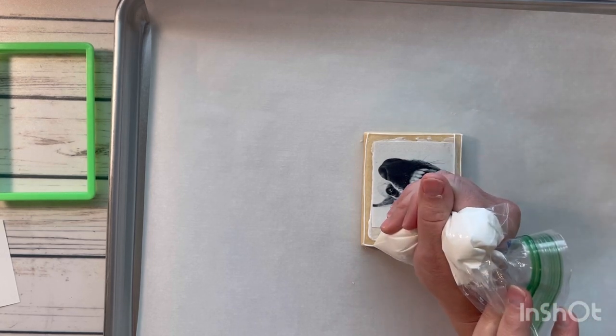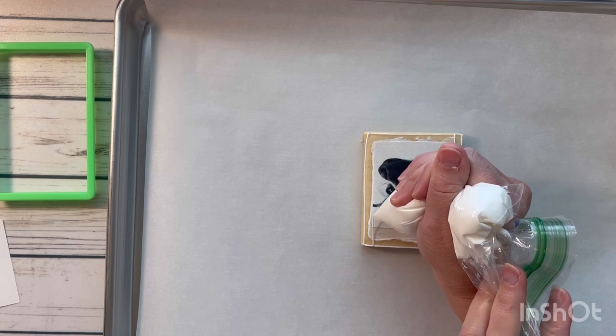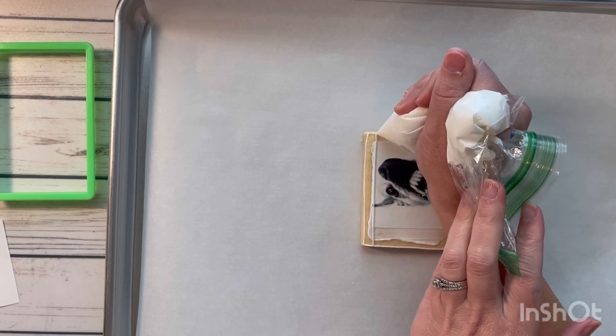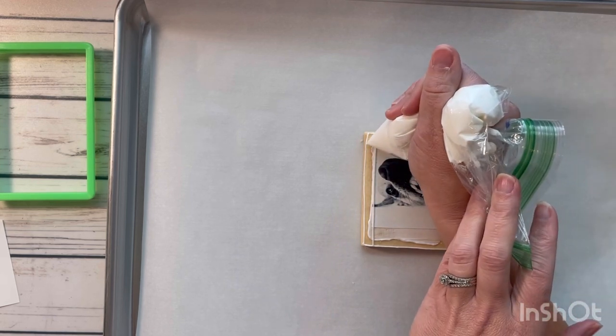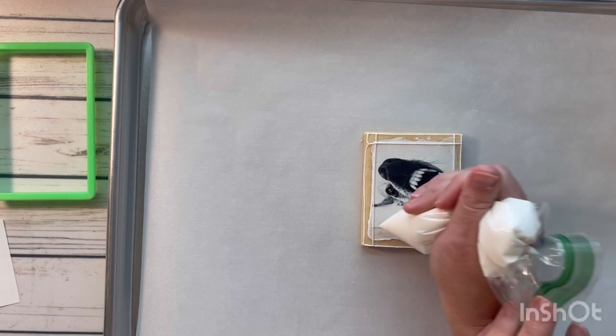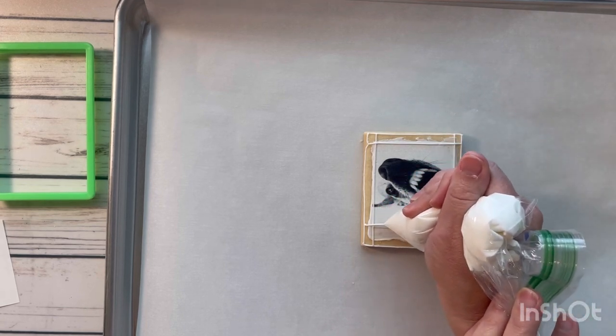Now you will see some people flood the entire cookie base first, and then they might use some piping gel or something like that brushed onto the dried flooded base, and then they'll stick their edible image on top of that. That's totally fine.